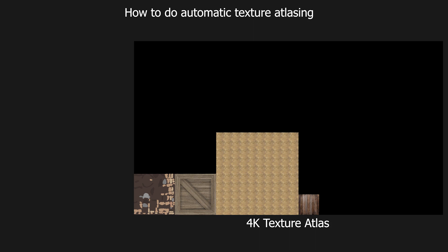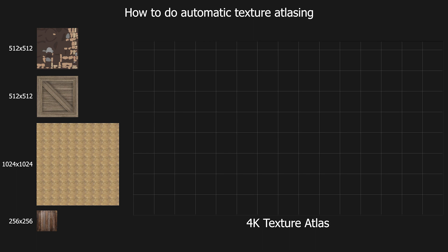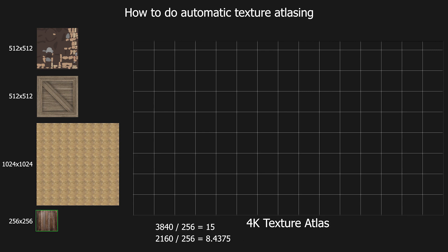To place the textures automatically, you first need to create slot areas in the atlas. The slot size should be equal to the smallest texture size, so in this case it will be 256x256. Since we have a 4K texture atlas, the number of horizontal and vertical slots will be 15 and 8 respectively.